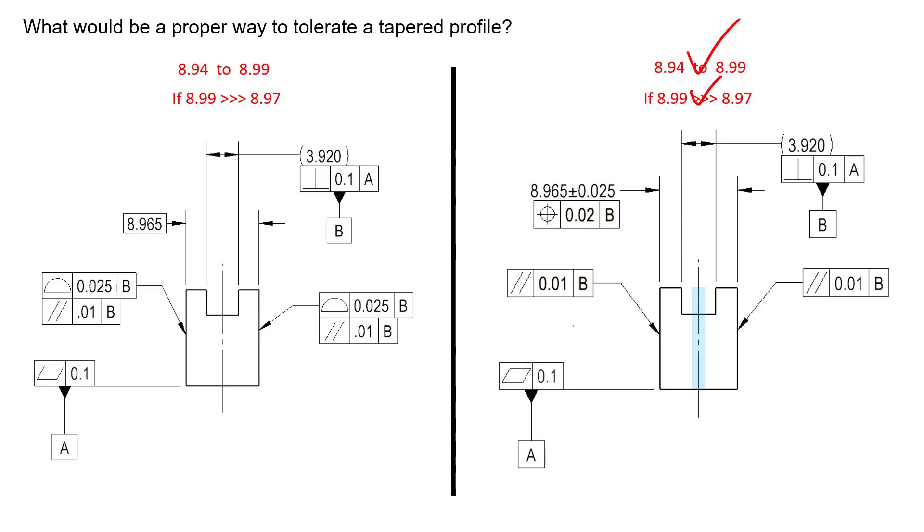We can control both specifications with this methodology. We've called out a size dimension, controlled the location, and then refined the orientation of both those surfaces. The other option on the left does it differently. Instead of controlling the size directly, we're controlling the overall size by controlling the location of each surface.